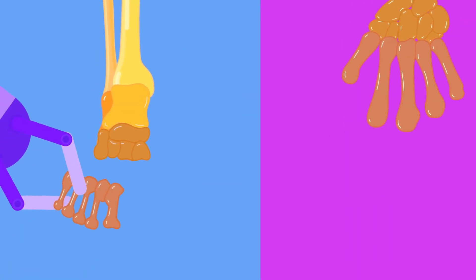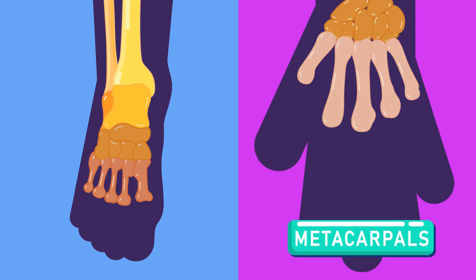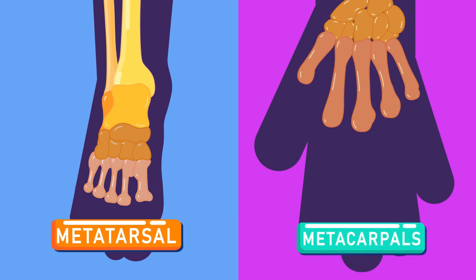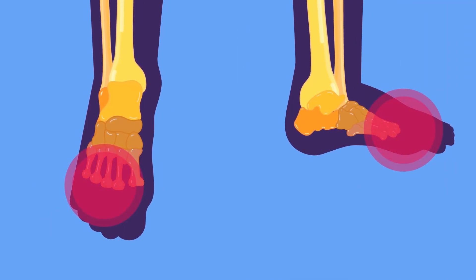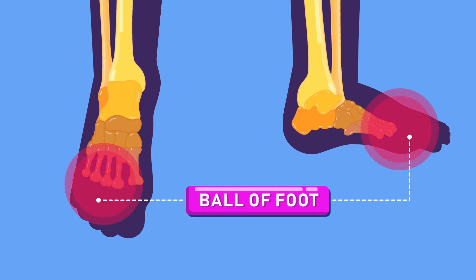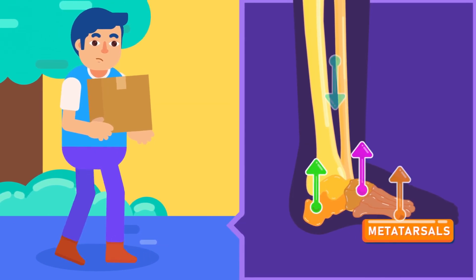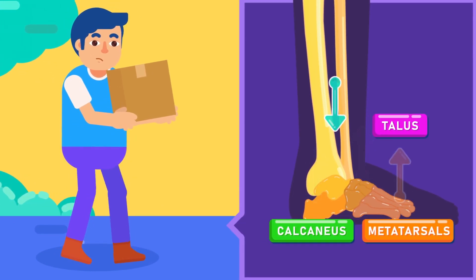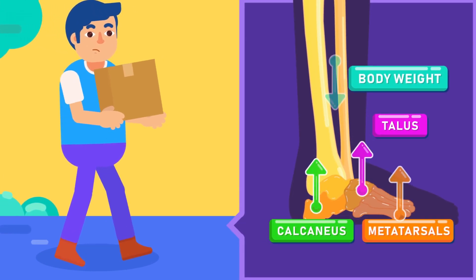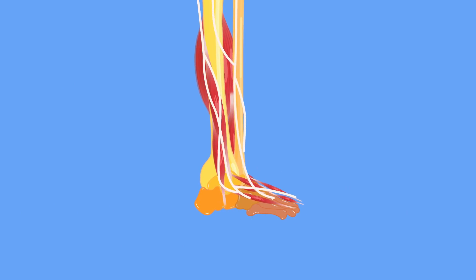The calcaneus, or heel bone, is the largest of the tarsus. The instep of our foot is similar to the palm of our hand, but instead of metacarpals it has metatarsals. The ends of the metatarsals on the bottom of our foot form the ball of our foot. As such, the metatarsals also help the calcaneus and talus to support our body weight.